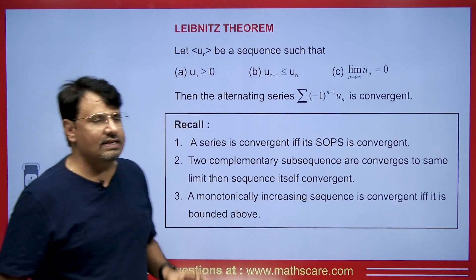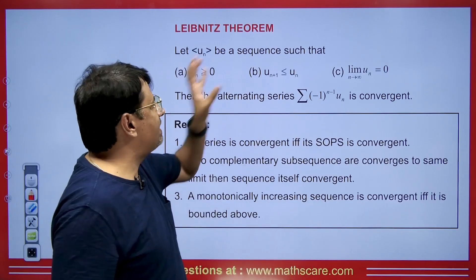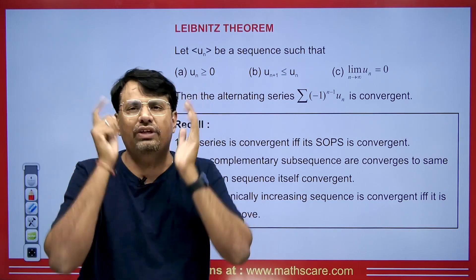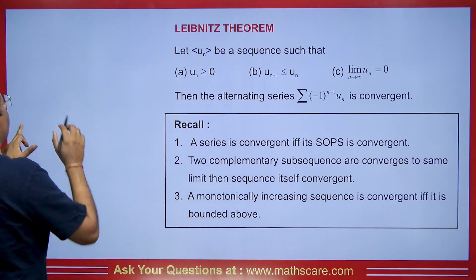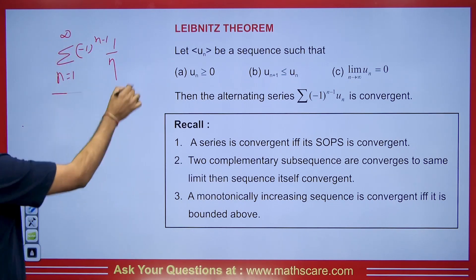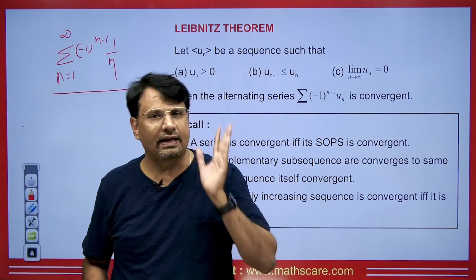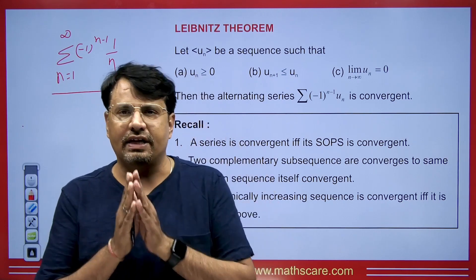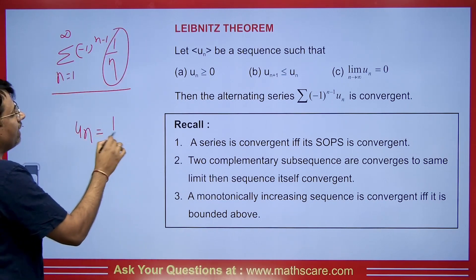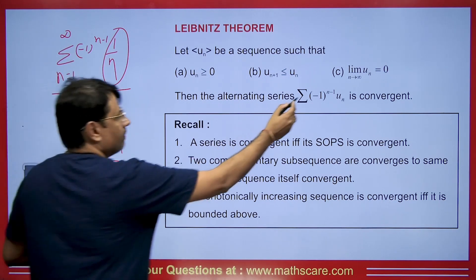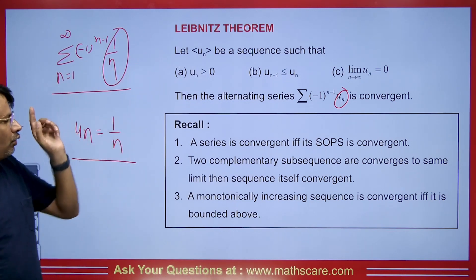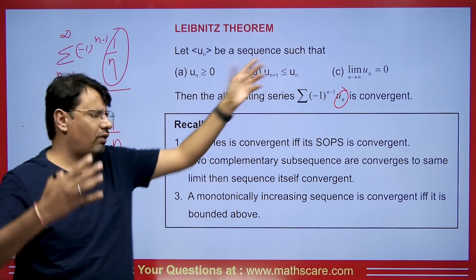Let's say we have an alternating series: summation of minus 1 to the power n minus 1 times 1 upon n, where n equals 1 to infinity. Here the u_n is defined as 1 divided by n. We need to consider three conditions: first, u_n must be greater than or equal to 0; second, u_n should be decreasing — which it obviously is; and third, the limit of u_n as n tends to infinity should be 0. The limit of 1 upon n as n tends to infinity is indeed 0. This indicates that the series is a convergent alternating series by the Leibniz test.